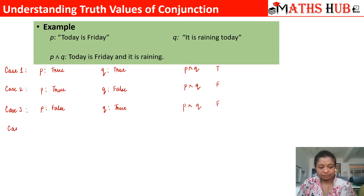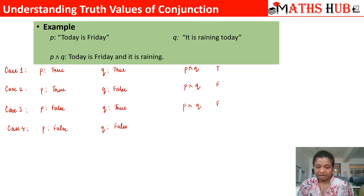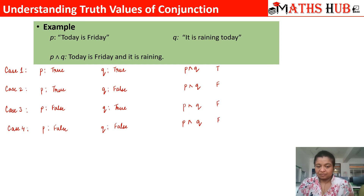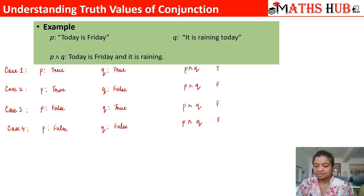Case 4: both p and q are false — today is not Friday and it is also not raining. The resultant p and q says today is not Friday and it is not raining, which does not match our argument, so the result is false. That is why the truth values are true, false, false, and false — the conjunction operator only gives a true answer when both statements are true; otherwise it is always false.